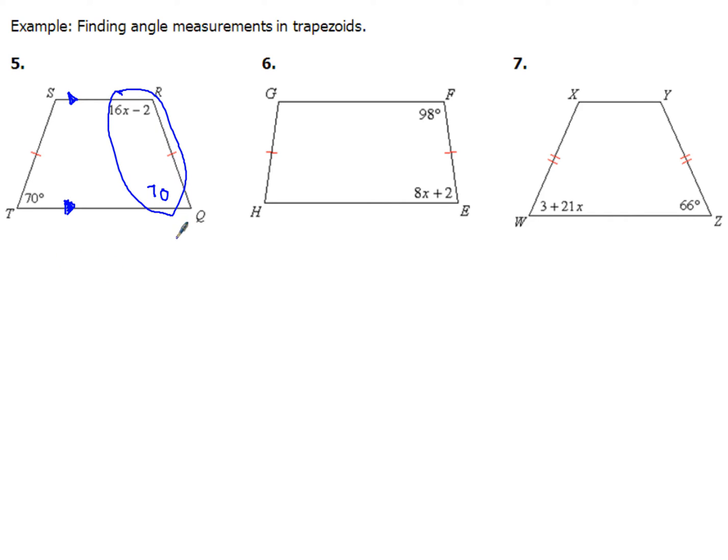So if I combine those two, I'll have 16x minus 2 plus that 70 degrees, that's going to have a sum of 180. Now combining these two terms, I'll end up with 16x plus 68, that equals 180.